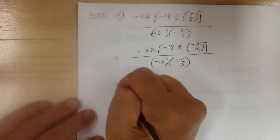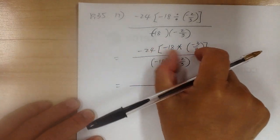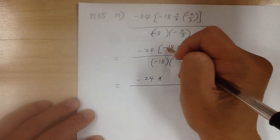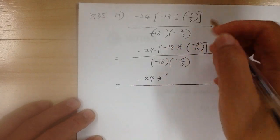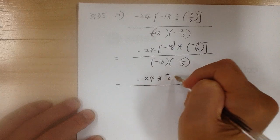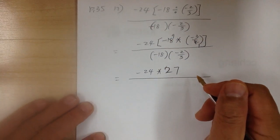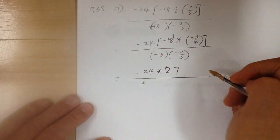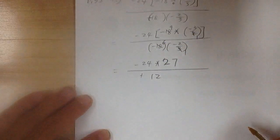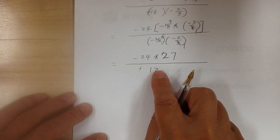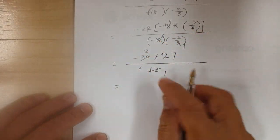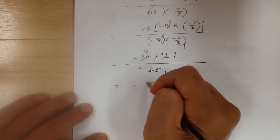Since there's a grouping symbol, I need to do the inside first. Negative times negative is positive. 2 and 18 can divide by 2 — divide by 2, I get 1; divide by 2, I get 9. So it becomes positive 27. On the bottom, negative times negative is positive. 3 and 18 can divide by 3 — I get 1 and 6 — so I get plus 12. Notice 12 and 24 can divide by 12 — I get 1 and 2. So now I have negative 2 times 27, which gives me negative 54.